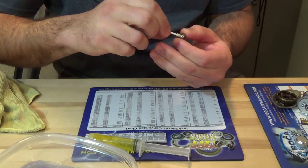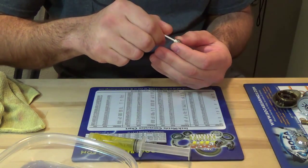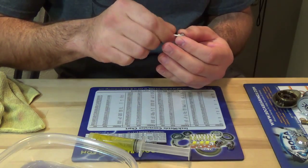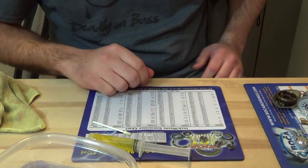So the bearings are oiled. If you choose to put the seals back on, go ahead and do that. If not, go ahead and install them back on your reel and you're good to go.